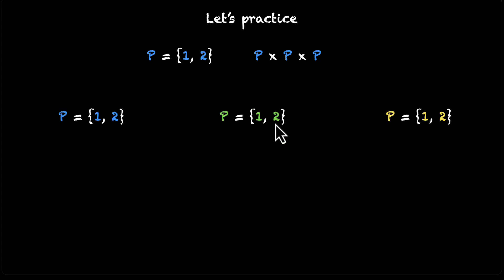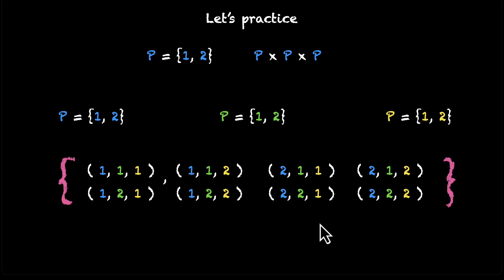Okay, so the first element will be (1, 1, 1). We can pick the next one like this. We can have (1, 1, 2). Okay, so (1, 2, 1) and then (1, 2, 2). Now we can do the same thing for 2. So (2, 1, 1), (2, 1, 2), (2, 2, 1), and then (2, 2, 2). And that's going to be the entire list. So put all of this inside a set, don't forget the commas. And that's your product P × P × P.